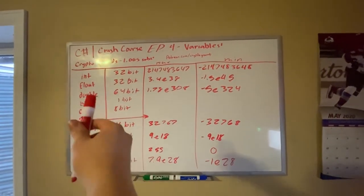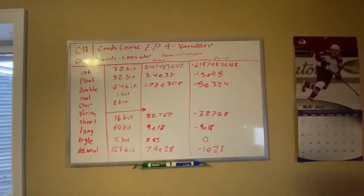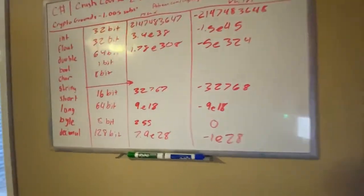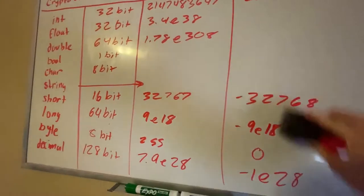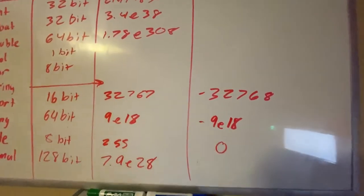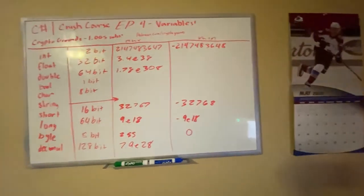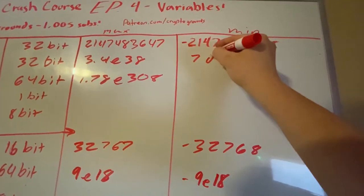All right, so take a look at those. Hopefully you understand that those are the mins, those are the max, and that is the size of each one of those. Again, string is different, so just remember that. Okay, now let's talk about float, double, and decimal real quick.